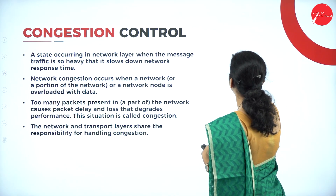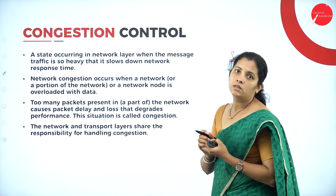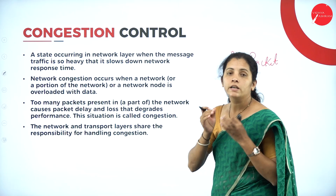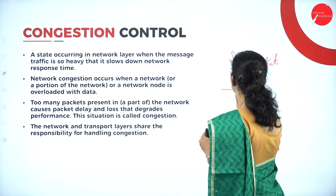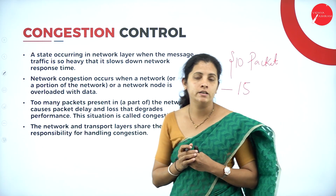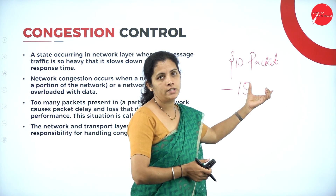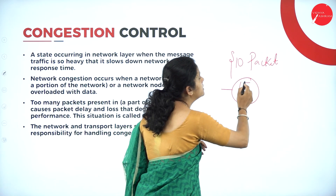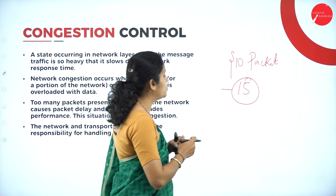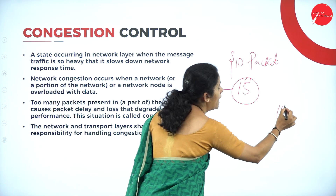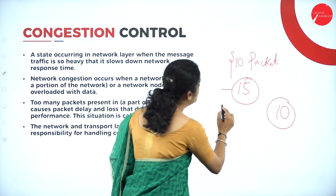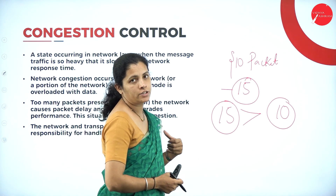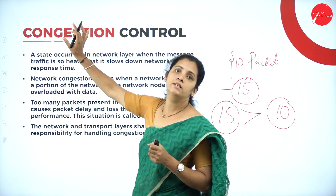So what is congestion control? Congestion occurs in a computer network when the load on the network is greater than the capacity. Consider the example: the capacity of the medium is capable to transfer 10 packets at a time. Suppose if I place 15 packets, there is traffic in the communication channel — the load is greater than the capacity of the network.